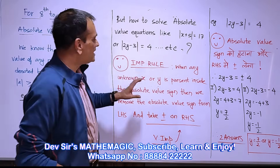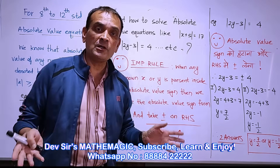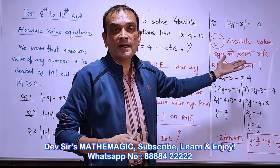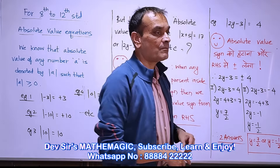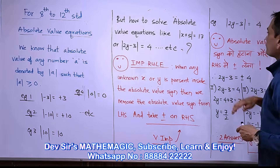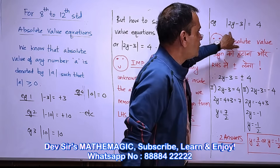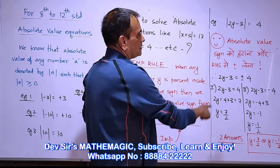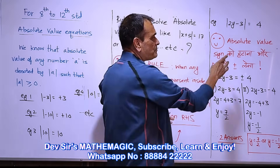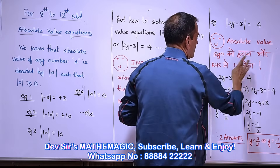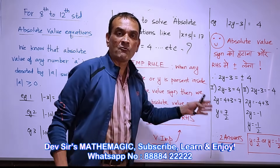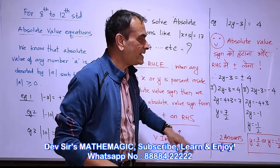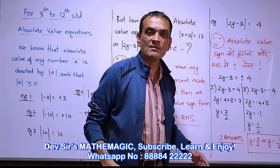When there is an unknown, it is called an absolute value equation. When you remove the absolute value sign, put plus or minus on the right-hand side. For example, take: absolute value of 2y minus 3 equals 4. Remove the absolute value sign and on the right-hand side write plus or minus 4. Simple.